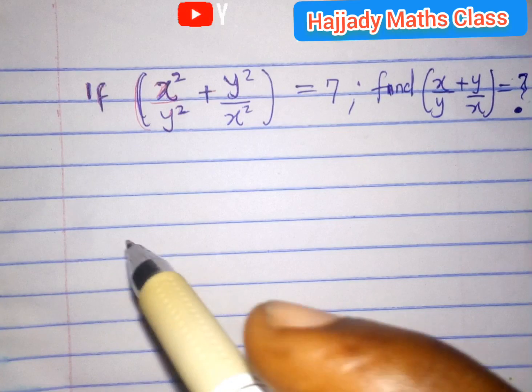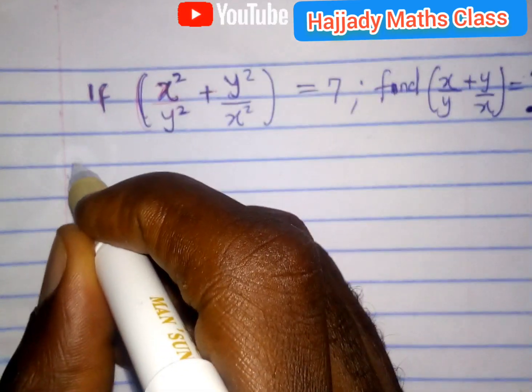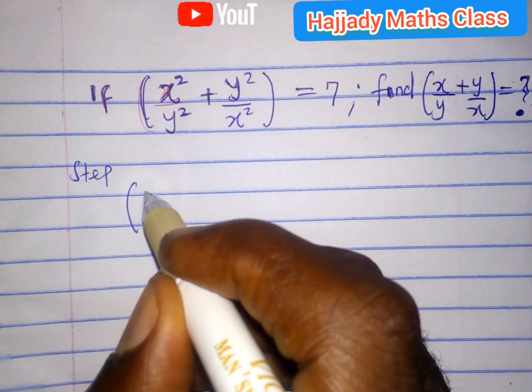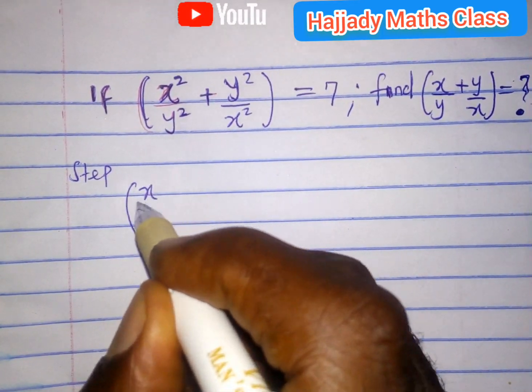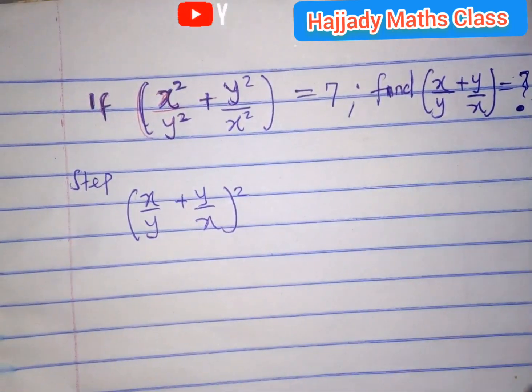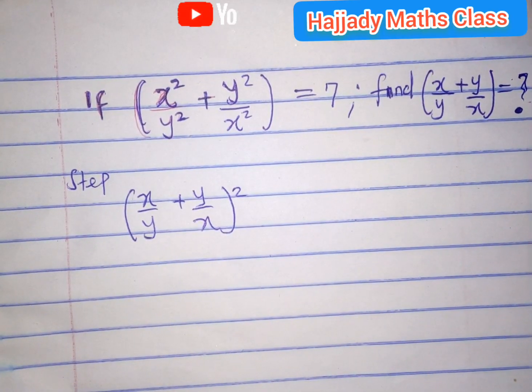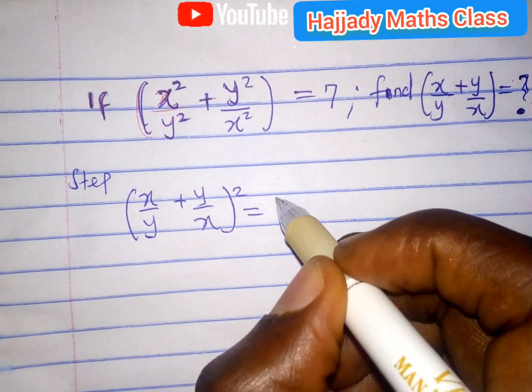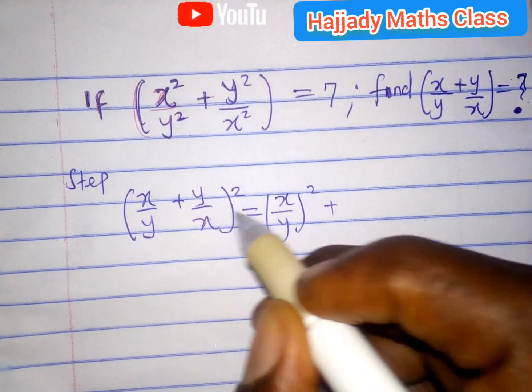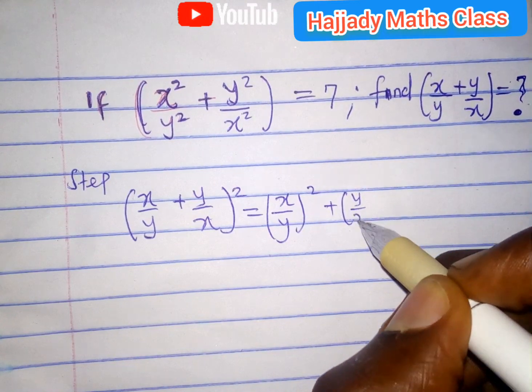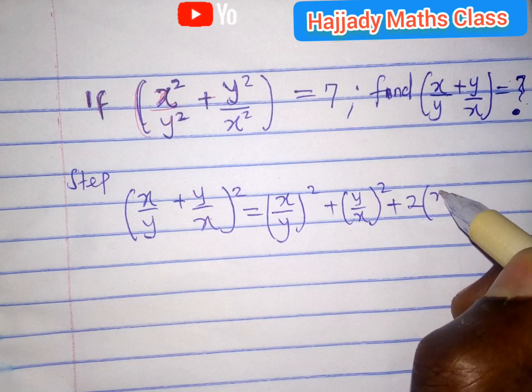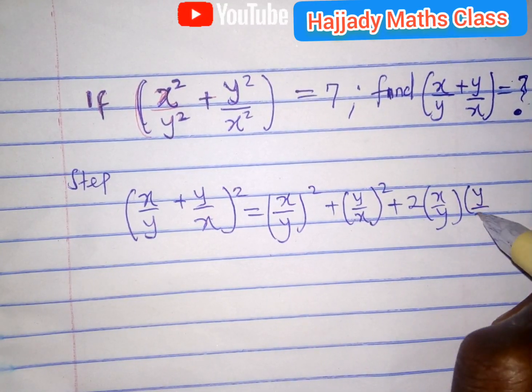we should know that the first step in doing this is that this can be expressed in this form: if you have x over y plus y over x all squared, expanding this, we are going to have x over y all squared plus y over x all squared and also 2 times x over y times y over x.